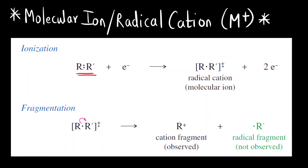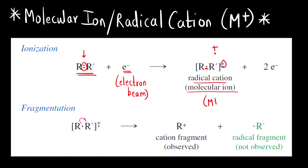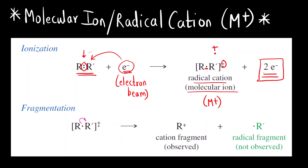Let us understand this with an example. Consider a compound with two groups R and R'. There are two electrons on the molecule. One electron from the electron beam is added and one electron is removed from the molecule — so overall two electrons are involved. The resulting species has a positive charge and a single electron, making it a radical cation, also called the molecular ion, symbolized M⁺. After formation of this radical cation, fragmentation occurs — bonds of the molecule break.